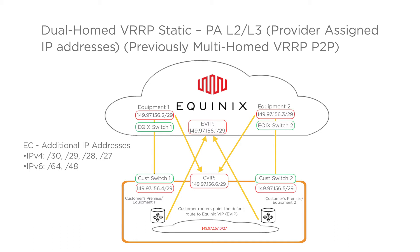Protection switching is based on a layer 3 approach, where the customer's equipment does the switching based on monitoring the hellos. The customer must provide the multi-access network layer 2 switching required for VRP advertisements between the master and slave.